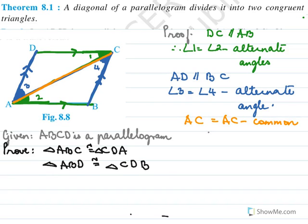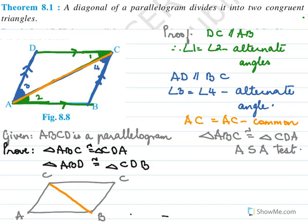So the triangles are congruent. In the same way, we can prove the other two triangles are congruent. For the other diagonal, we have these lines parallel and we draw Z's to find alternate angles on both sides.